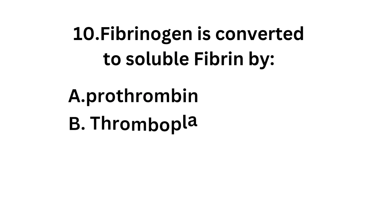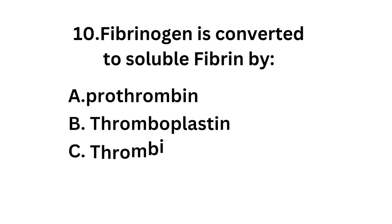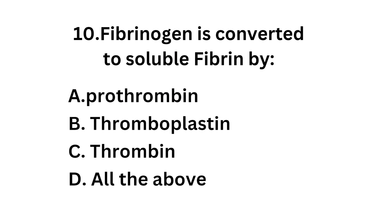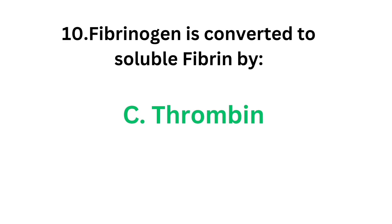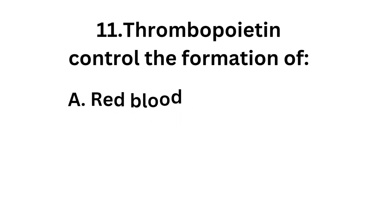Question number ten: fibrinogen is converted to soluble fibrin by — option A prothrombin, option B thromboplastin, option C thrombin, option D all the above. The correct answer is option C, thrombin. Fibrinogen is converted to soluble fibrin by thrombin.